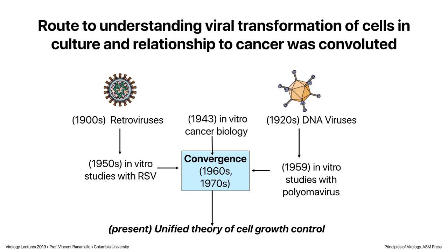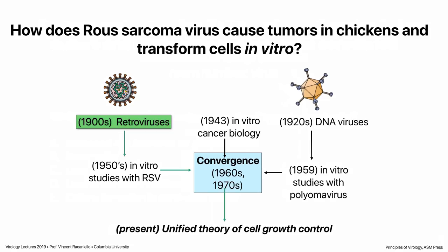Here's the story we're going to go through today — the historical route to understanding how viruses transform cells and the relationship to cancer. We have retroviruses discovered in the 1900s; Temin begins to work on this problem in the 1950s. We have DNA viruses discovered in the 1920s and 1950s, shown to cause tumors in animals. These are going to converge in the 1960s and 1970s, along with studies on cancer biology in vitro, and it's all going to become clear how these things result in transformation through cell growth control.